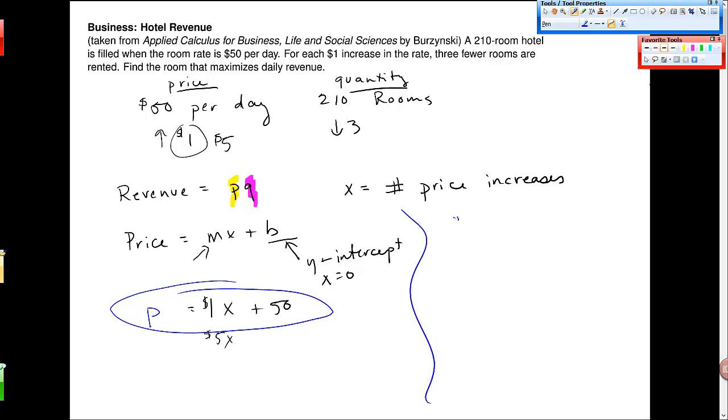Now, so over here, we also have kind of a similar thing for quantity. This is a linear relationship. If I don't change the price at all, then I sell out this 210 rooms. I know that, right? So that's b. When x is 0, quantity is 210. And then when I change it once, quantity goes down by 3. That's a negative 3 for slope.